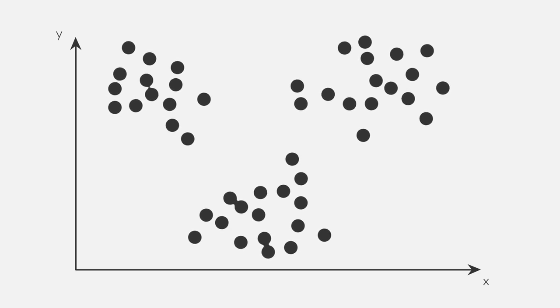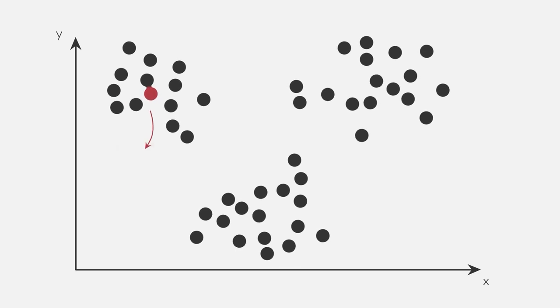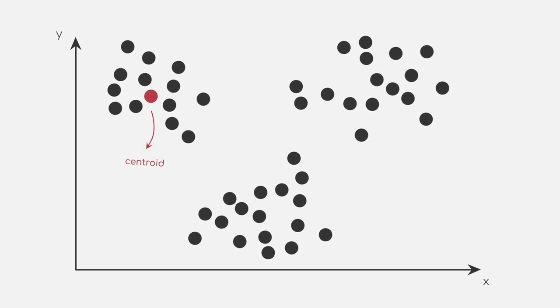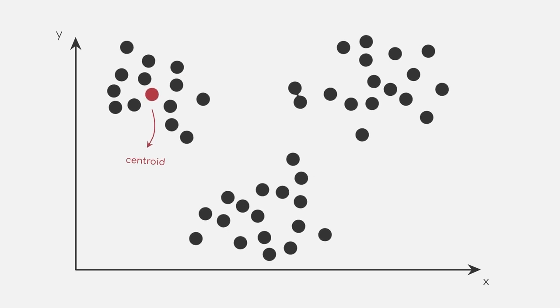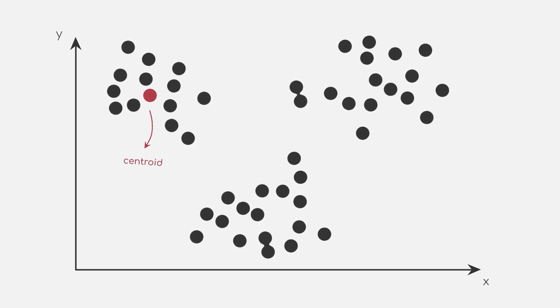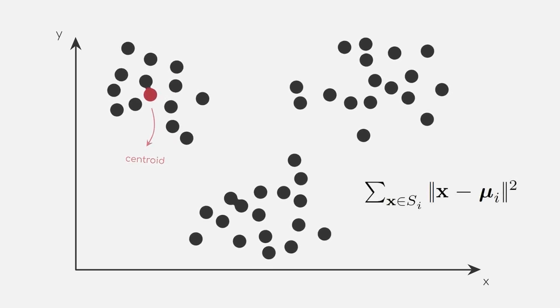Firstly, we need to identify a center point of our cluster. This center point is also called a centroid. For now, we will just randomly put one and explain more on that later. Considering our center point, we can now calculate the variance as the sum of the squared distances between each individual data point and the center point.